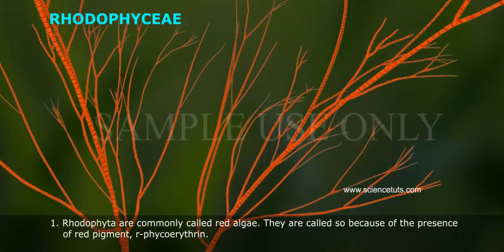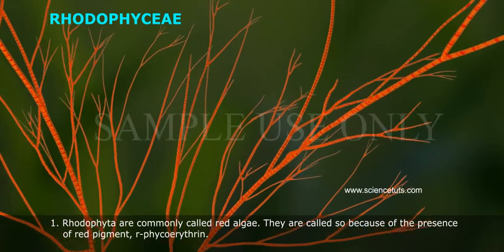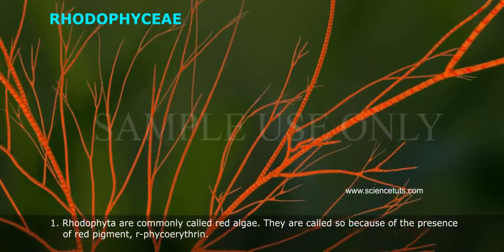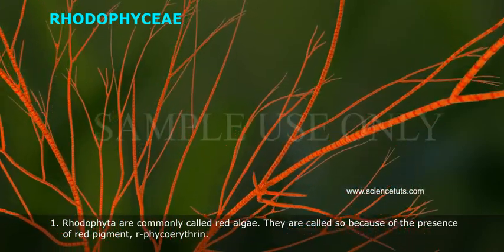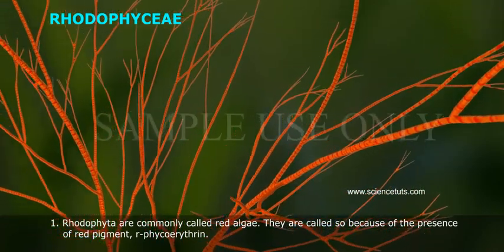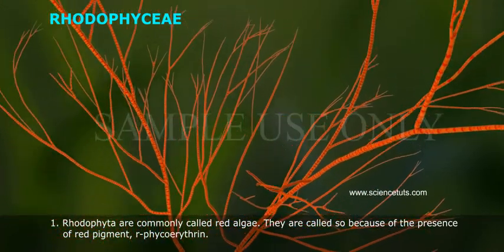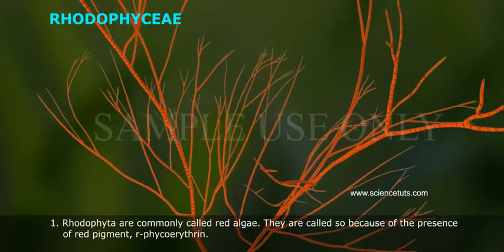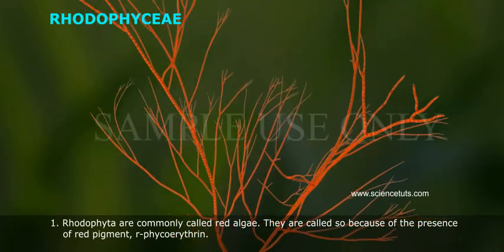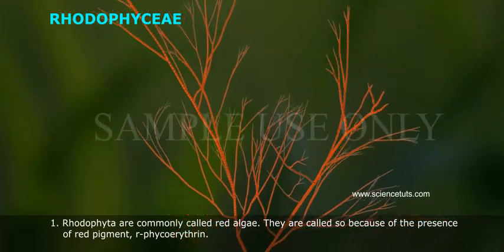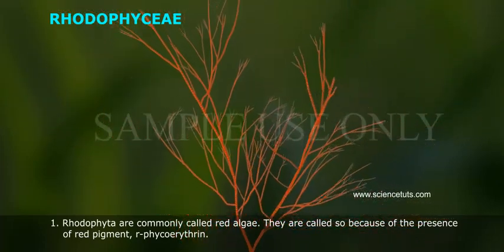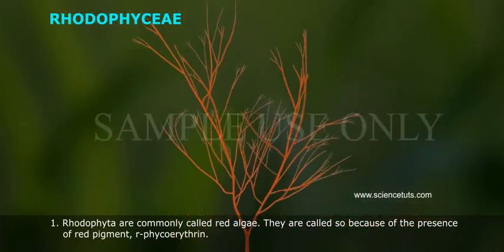Rhodophyta are commonly called red algae. They are called so because of the presence of the red pigment phycoerythrin.